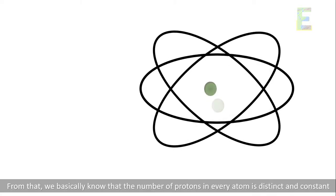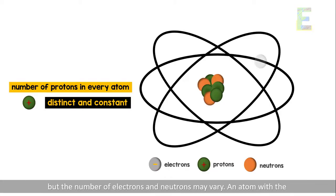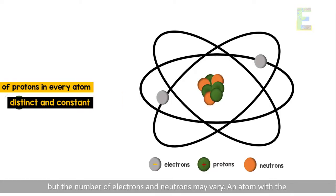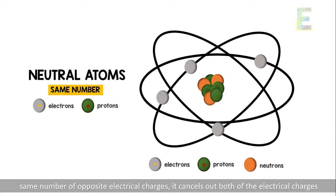From that, we basically know that the number of protons in every atom is distinct and constant, but the number of electrons and neutrons may vary. An atom with the same number of electrons and protons are called neutral atoms, because with the same number of opposite electrical charges, it cancels out both of the electrical charges.